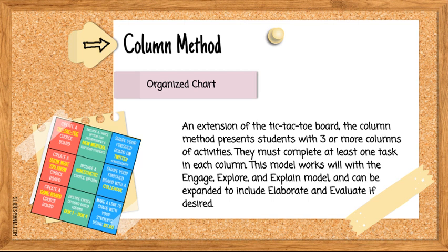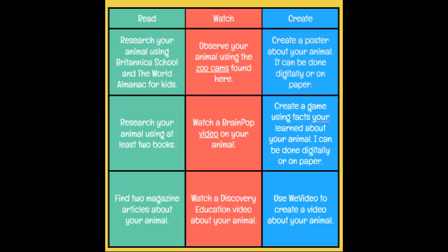The second option is the column method, very similar to tic-tac-toe, except students must complete an activity from every column. In this example I have a Read column, a Watch column, and a Create column — where everyone reads something, everyone watches something, and then everyone chooses something to create. Both online and offline options are included for students. You could also use the three Es or five Es framework, with column headings like engage, explore, and explain. Color coding is in effect here to help students move across the columns — not required, but a nice feature when designing your choice boards.